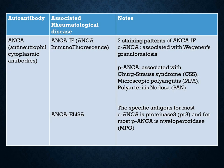ANCA — there are two tests for testing ANCA: immunofluorescence and ELISA. In immunofluorescence, there are two staining patterns: C-ANCA, which is associated with Wegener's granulomatosis, and P-ANCA, which is associated with Churg-Strauss syndrome, microscopic polyangiitis, and polyarteritis nodosa. For ELISA, the specific antigen for most C-ANCA is PR3, and for most P-ANCA is MPO.